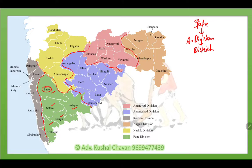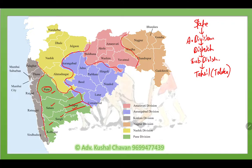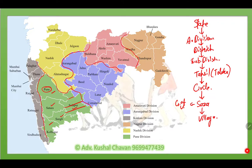Each district is again divided into a number of subdivisions. A subdivision is again divided into a number of tahsils — we can also call them talukas. A taluka is again divided into a number of circles. A circle is divided into a number of saazas, and a saaza is nothing but a group of villages. A saaza is again divided into individual villages. This is the hierarchy of administrative units in the state of Maharashtra.